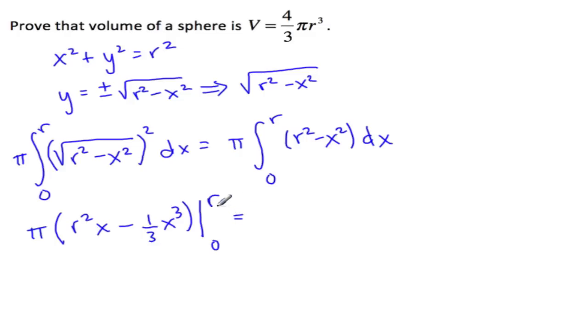Alright, so now let's plug in r, so I get pi times r cubed minus one-third r cubed minus, when I plug in zero, I just get zero. So then we get two-thirds pi r cubed, and that will be the volume of the hemisphere.